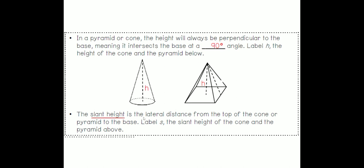The slant height is the lateral distance from the top of the cone or the pyramid to the base. Label S the slant height of the cone and the pyramid above. So for this cone the slant height could be either this diagonal line or that diagonal line. I'm just going to label this S. For the pyramid it's the dotted line. We're going to label that dotted line S.